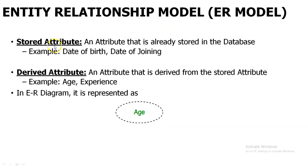The next one is stored attribute and derived attribute. A stored attribute is an attribute already stored in your database. A derived attribute is derived from a stored attribute. For example, from the date of birth, I can derive the age of the student. Similarly, from the date of joining, I can derive the experience of a faculty. This is your stored attribute and derived attribute.